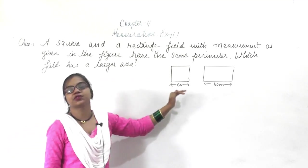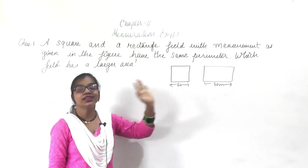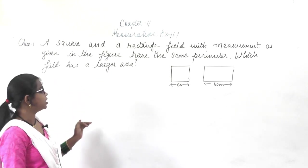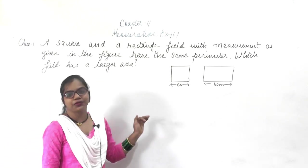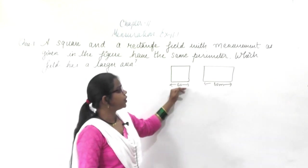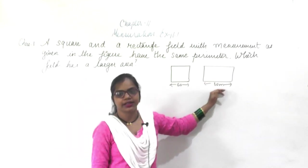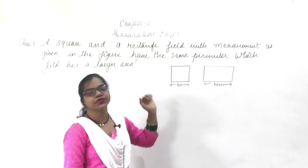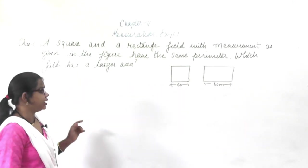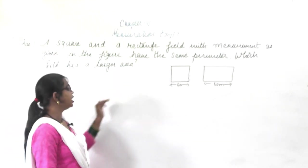The perimeter of the square and the perimeter of the rectangle both will be equal. Which field has the larger area? You have to find out the area of the square, then find the area of the rectangle, and from this you have to compare which has the larger area. So, what exactly do we have to find out? We have to find out the area.